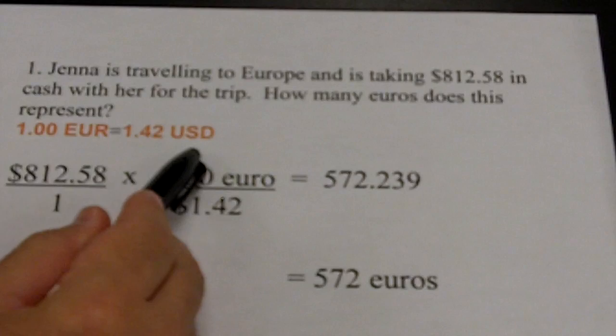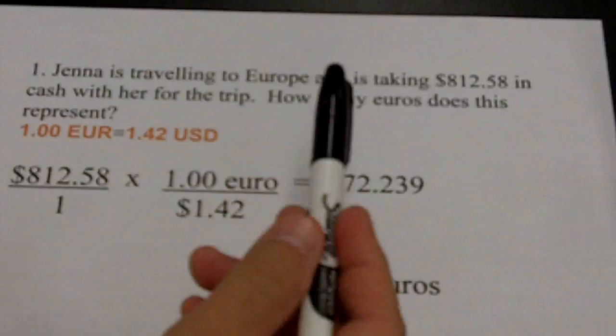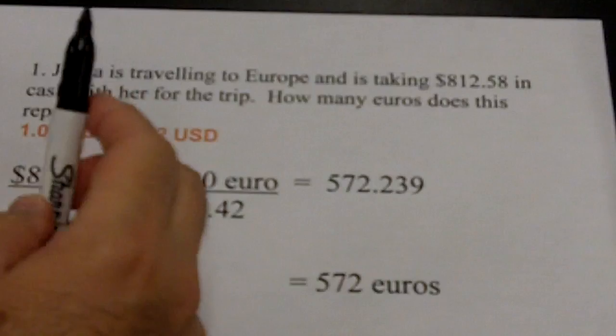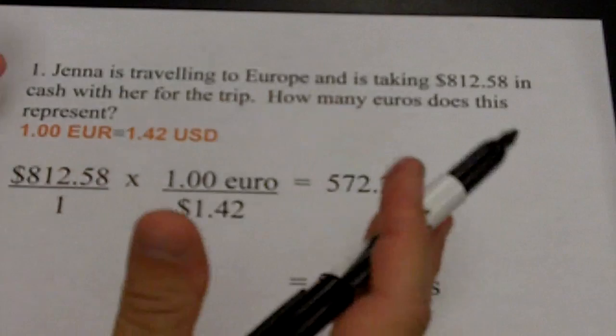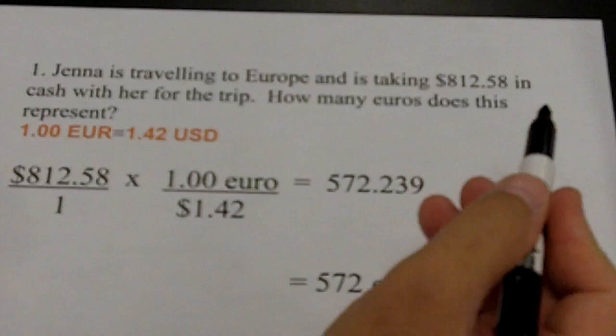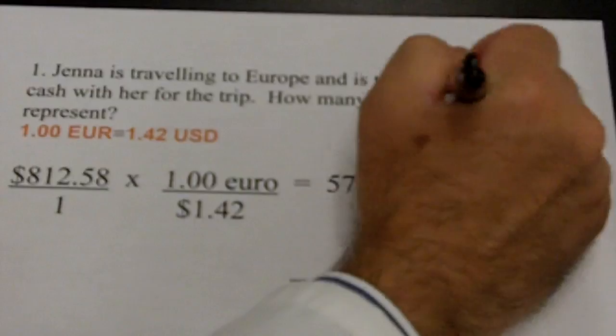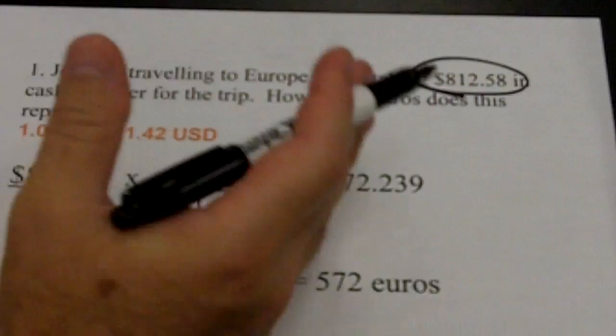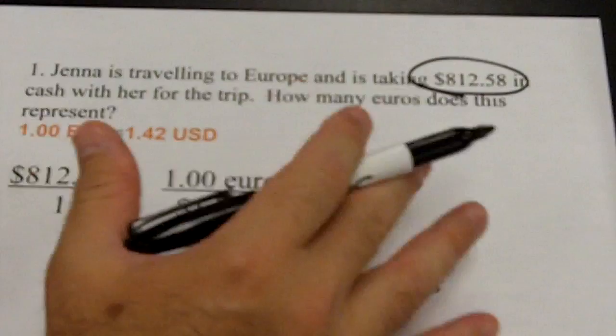Students often ask me, where do I start? I always tell them: let your pen lead your brain. What I mean is that just doing something physically with your pen is going to get your brain started in the right direction. The first thing you want to do is find any numbers in the problem. Often in chemistry problems there's only one number. Circle that number together with its unit — in this case, $812.58. Find the number and circle it together with its unit.